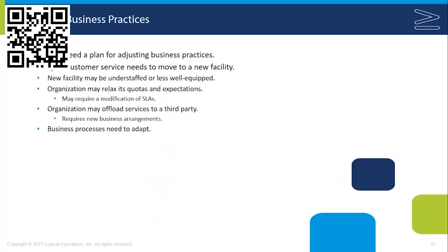Alternate business practices may be necessary if major elements of the business change — for example, moving customer service operations from the main facility to an alternate processing site in a different geographic location. The new facility may be understaffed or less well-equipped, so the organization may relax quotas and expectations. They may also offload some services to a third party, requiring new business arrangements. Business processes need to be flexible and adaptable, but there should be plans and procedures in place for this.